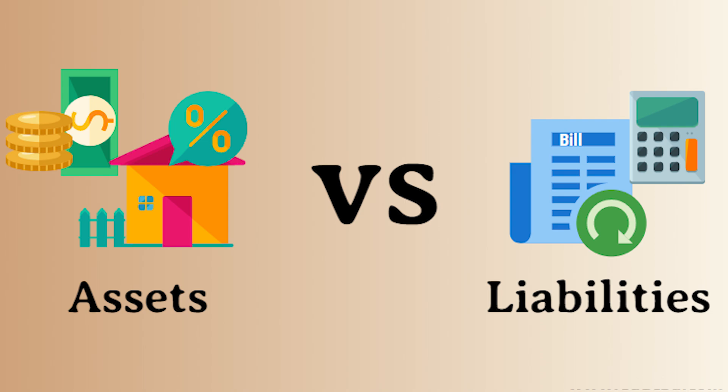An asset is something that helps a company generate additional revenue. There are two types of assets: current assets and non-current assets. Non-current assets are ones that a company holds for more than one year. I'm talking about fixed assets like machines, land, building, etc. When the value of non-current assets increases from one year to the other, it basically means that the company is increasing its production facility.